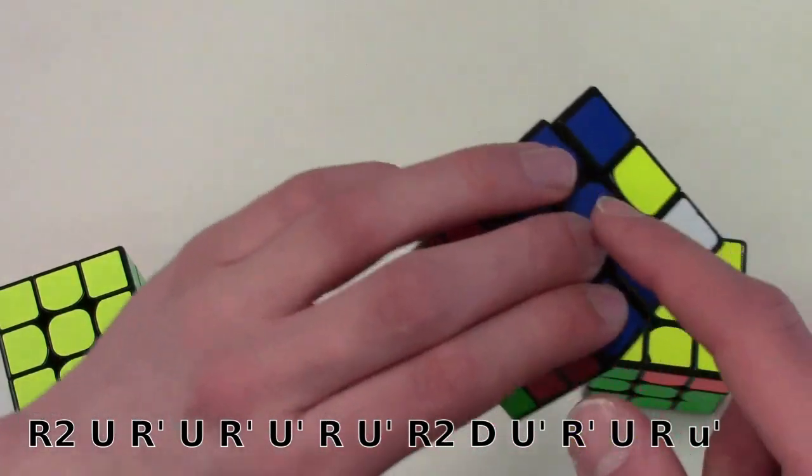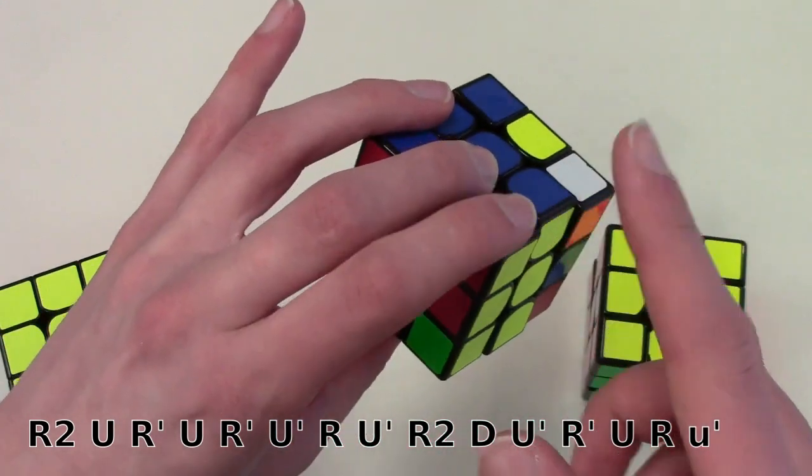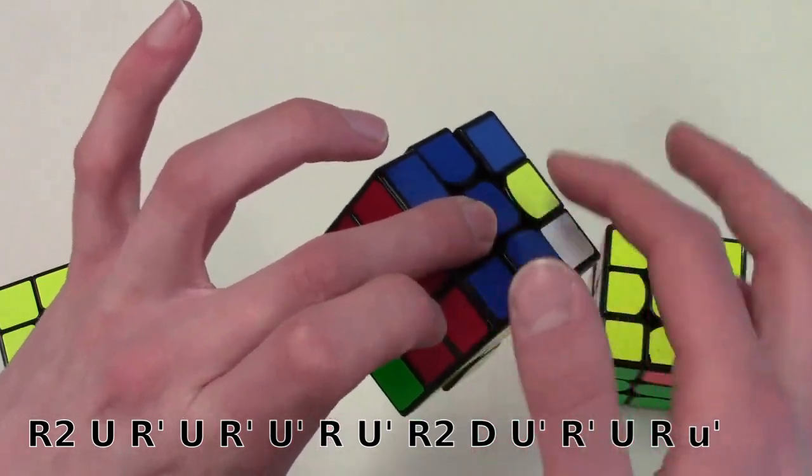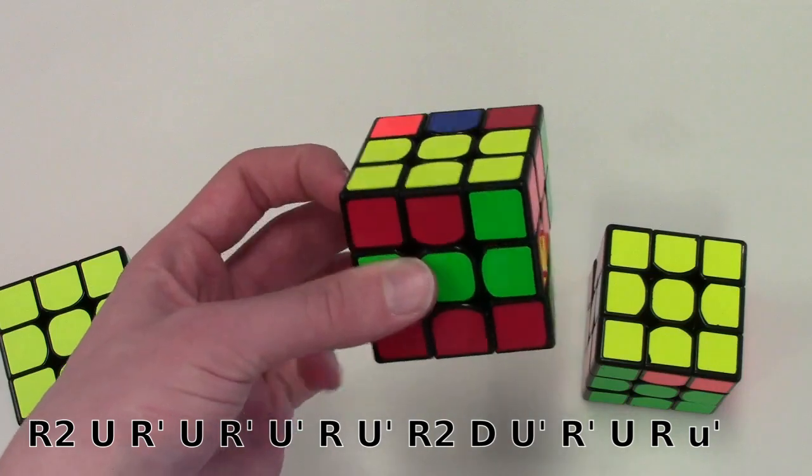I can do a D-move, which I would flick with my ring finger here, and at the same time I can do U' which I'll flick with my index finger, making sure that I hold on nice and tight with my middle finger here on the middle, and with my thumb on this middle air. So I just go both at the same time.